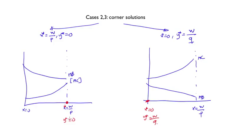Not surprisingly, given everything that we have seen, these are cases in which the marginal cost and marginal benefit curves do not cross in the interior of the feasible range.